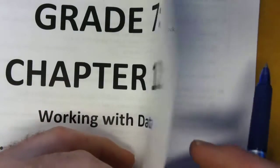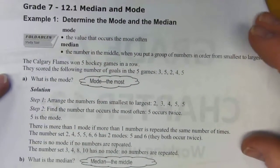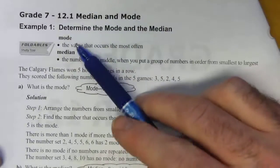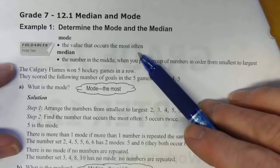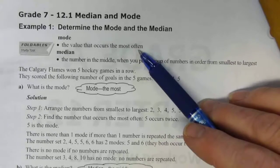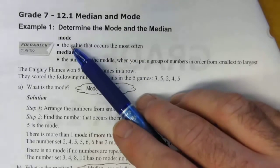So today, let's get started on 12.1: Median and Mode. We'll determine the mode and the median. For some definitions to start with: mode is a value that occurs most often. So if you've got a set of numbers that represent something, and you've got numbers that repeat, the one that occurs most often is called the mode.